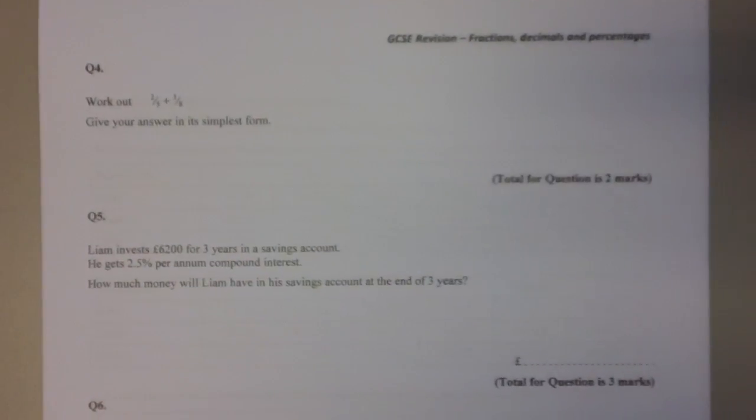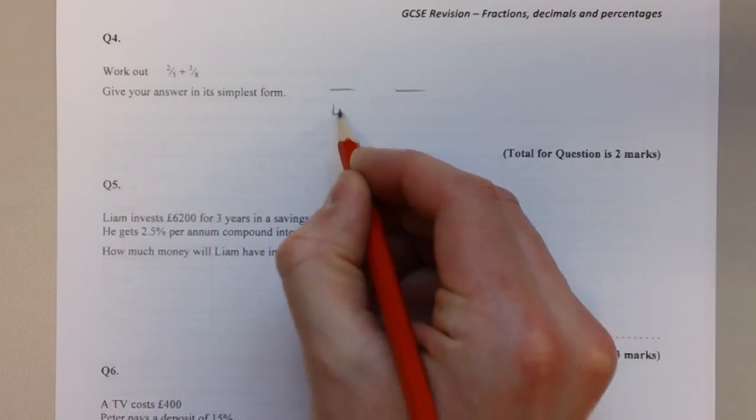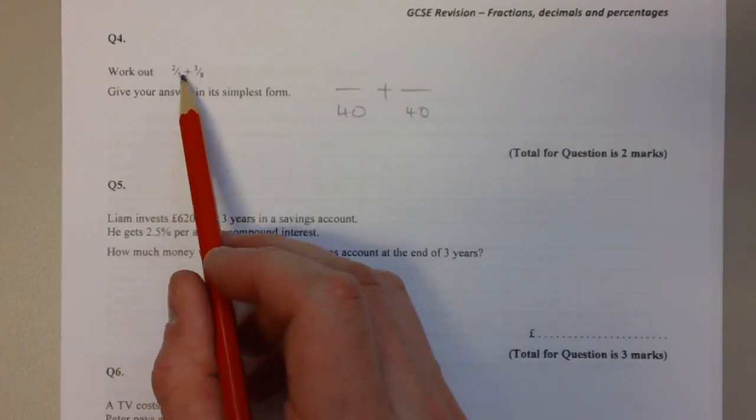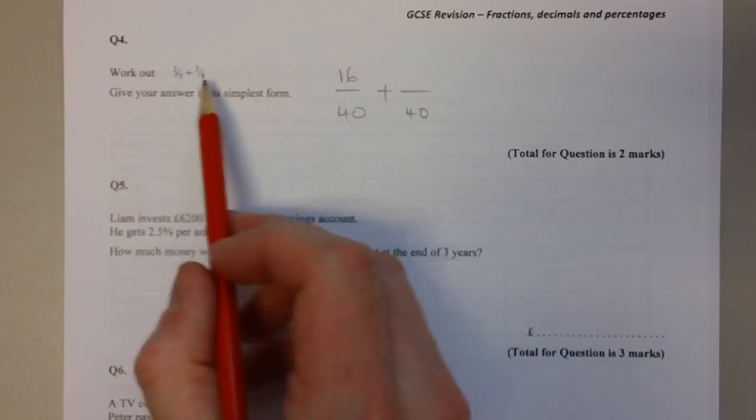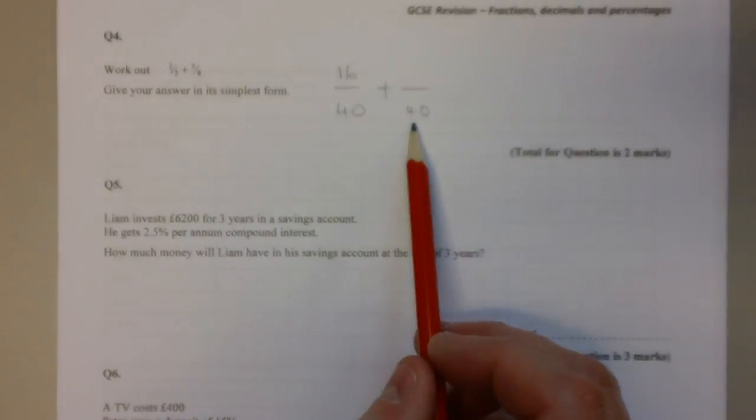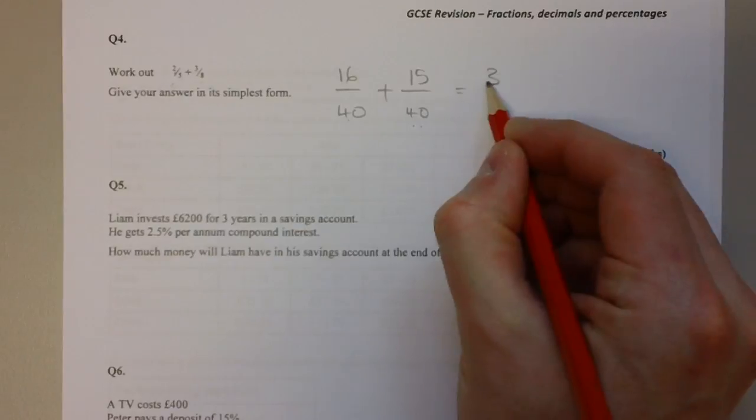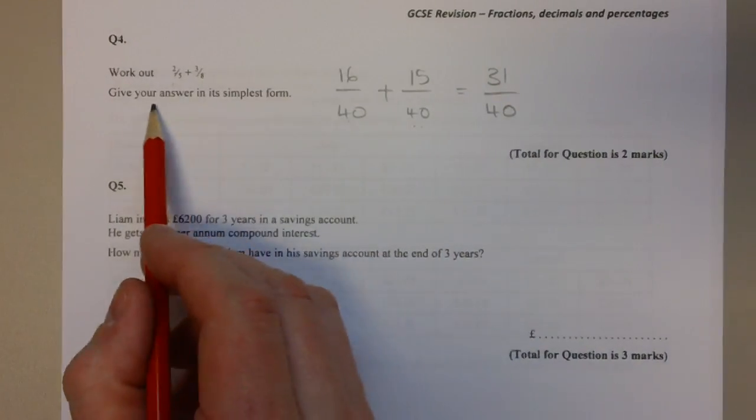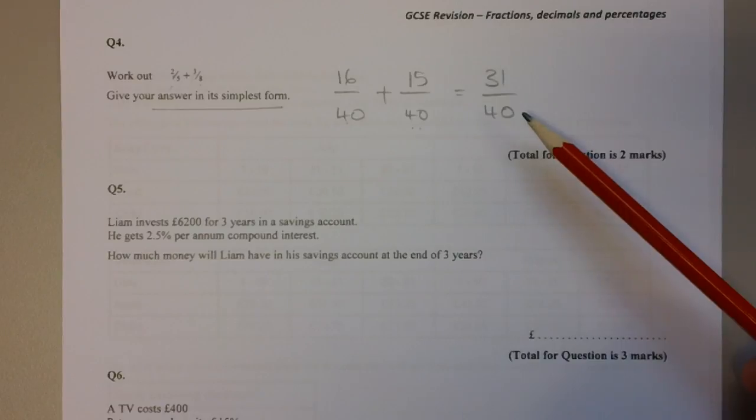Question number four: We have to add together two-fifths and three-eighths. We can't add fractions unless the bottom numbers are the same. We can write both as fractions over 40, because five and eight both go into 40. We times five by eight to turn it into 40, so if we times the top by eight, that means this fraction and this fraction are equivalent. We times eight by five to turn it into 40, times the top by five. 16 fortieths plus 15 fortieths is 31 over 40. This fraction won't simplify anymore because there is no number that both 31 and 40 will divide by other than one.